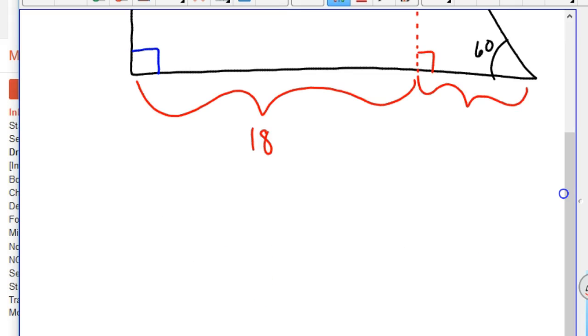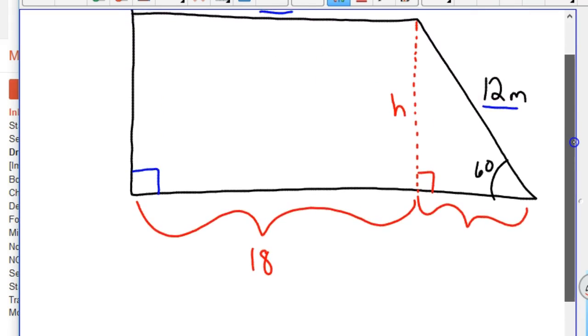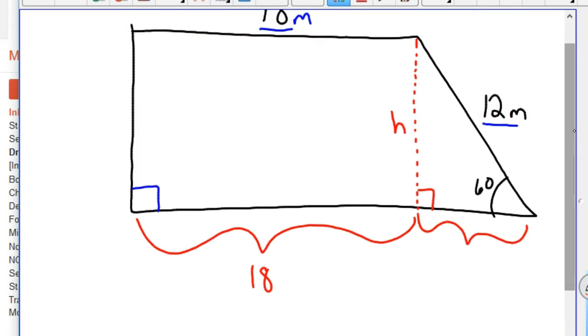So when we do this, we can go ahead and there's lots of ways we can figure this out. If you know special right triangles, you know that this side is half of the 12, which is 8. Or not 8, good lord. It is 6. 12 divided by 2 is 6. And then the height is 6 root 3.